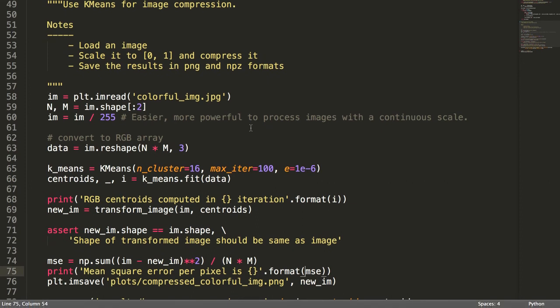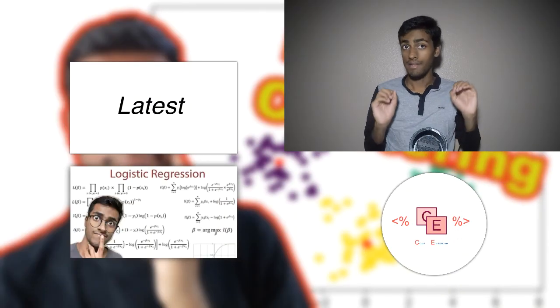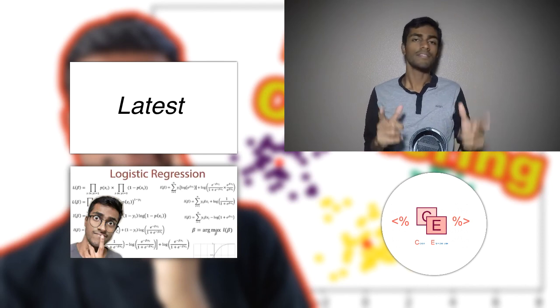Just run k-means-test.py and it will generate the compressed image in the plots folder. And so we have successfully implemented an image compressor using the simple k-means algorithm. You can get all this code on GitHub, so check it out.